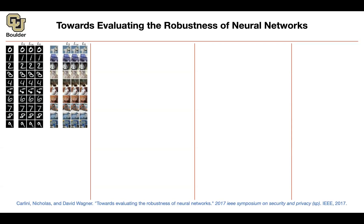So far we covered an example. The first paper was an example of an L2 adversarial example—L2 norm—meaning that the adversarial example needs to be close to a natural example in the L2 sense. You can have L-infinity, which was the previous paper. You can have L0, and depending on the norm, you can have different types of adversarial examples. L0 is very nice because you are changing very few pixels in your image.